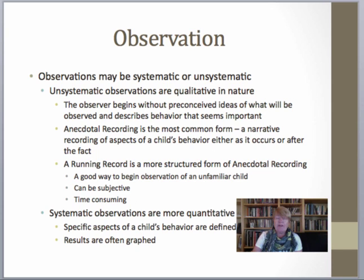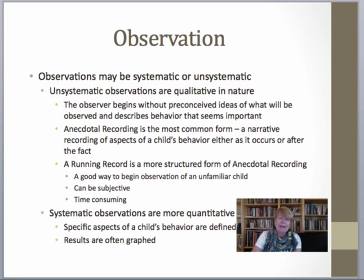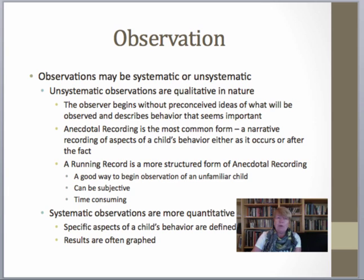The most common form of unsystematic observation is anecdotal records — a narrative record of aspects of a child's behavior either as it occurs or after the fact. Generally, we do anecdotal recording after the fact, sitting down at the end of the day to record notes about the child's behavior: important moments, aha moments, or behaviors related to a goal or objective. Those moments are what typically get jotted down in an anecdotal record.